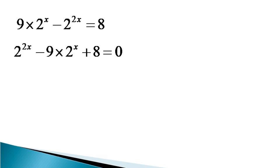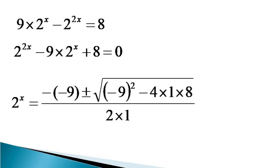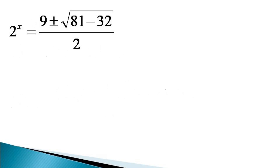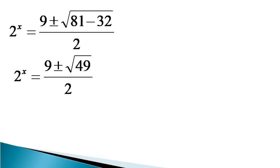This equation is actually a quadratic equation in 2 raised to the power x, and the value of 2 raised to the power x can be given by the quadratic formula as: 2 raised to the power x equals (9 plus or minus the square root of 9 squared minus 4 times 1 times 8) divided by 2, which simplifies to (9 plus or minus the square root of 81 minus 32) divided by 2, and further to (9 plus or minus root 49) divided by 2.